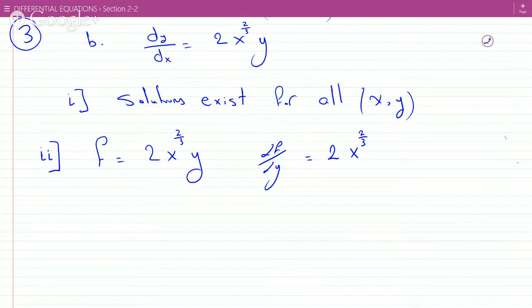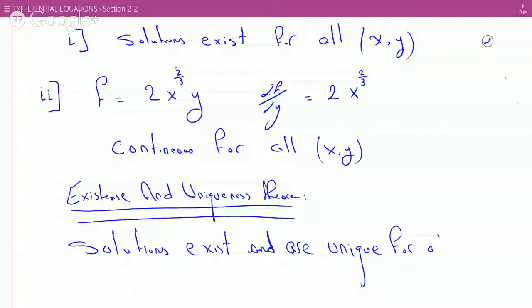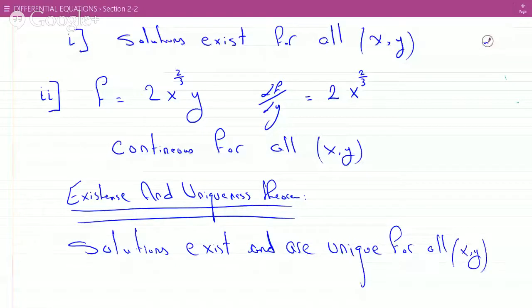Where are those continuous? Those are continuous for all xy. Therefore, according to the existence, there it is for all xy. Since these are continuous for all xy.